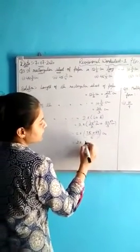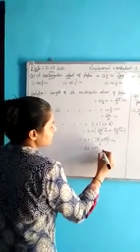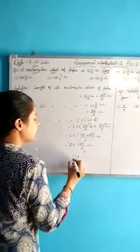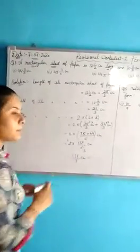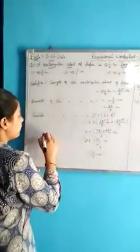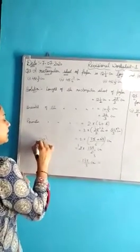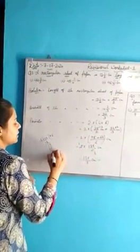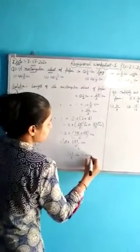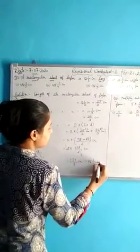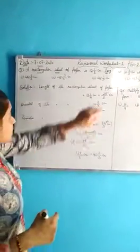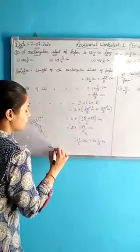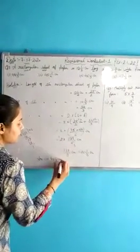Now multiply by 2: 2 multiplied by 139/6 gives 139/3 centimeters. Convert this improper fraction into a mixed number by dividing 139 by 3 — 3 goes 46 times with a remainder of 1 — so the answer is 46 and 1/3 centimeters. Check which option it is: 46 and 1/3 is option number 3. So our answer is option 3, that is 46 and 1/3 centimeters.